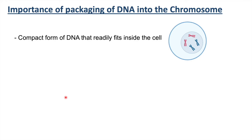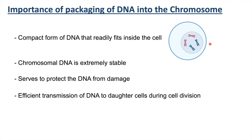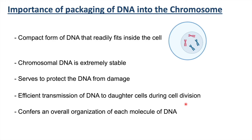Chromosome is a highly compact form of DNA that readily fits inside the nucleus of the cell. It is very difficult to understand the amount of genetic material we have and how efficiently it can be fit inside the nucleus of the cells. When needed, it can be easily accessible for replication, transcription, and recombination. Chromosomal DNA is extremely stable and serves to protect DNA from damage from nuclear enzymes, and it also allows efficient transmission of DNA to daughter cells during cell division.